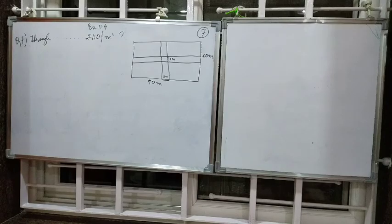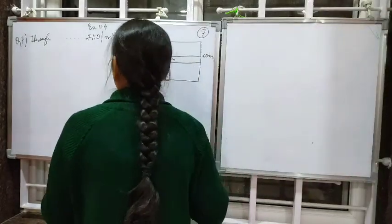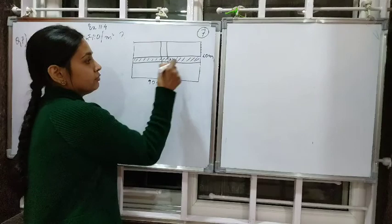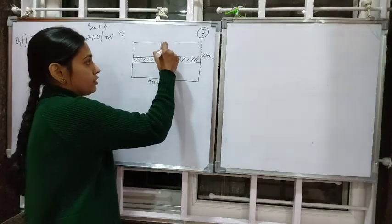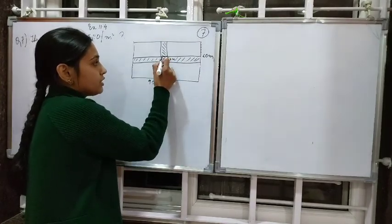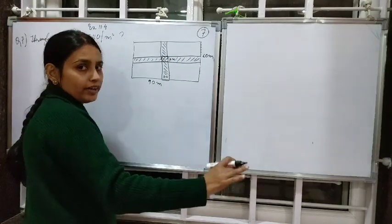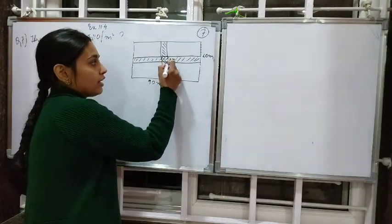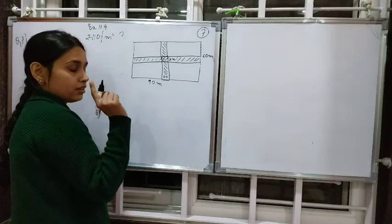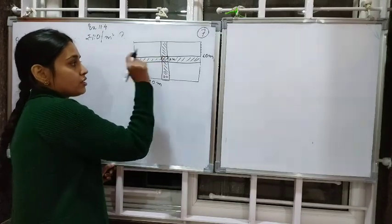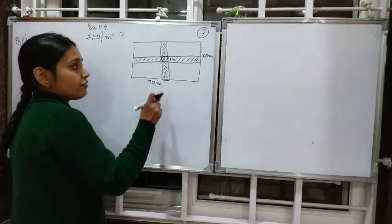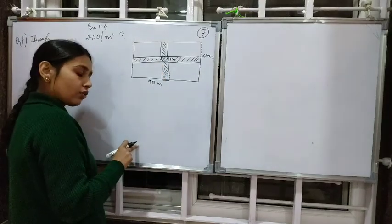First we find the area of this road, then the area of the other road. But when we add them, there is a common portion where they overlap, so we remove it by finding the area of the square portion whose each side is 3 meters — just like we did in question number 6. Then we find the total area of the two roads.